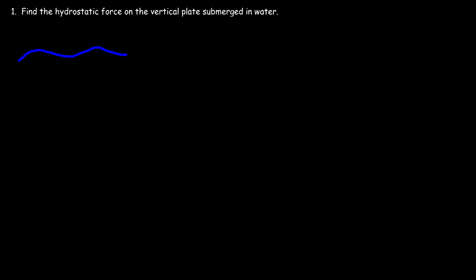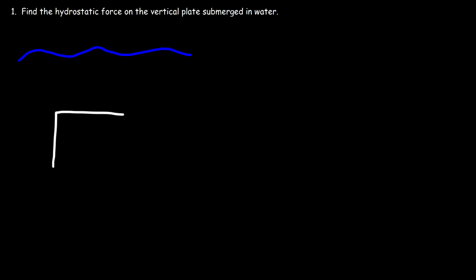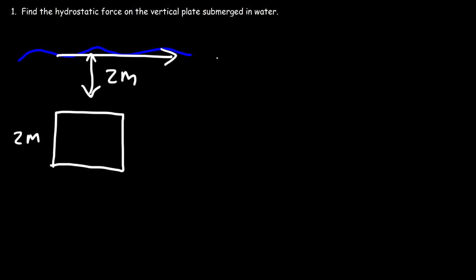Let's say this is the water level and we have a square vertical plate, two meters below the surface, with a side length of two meters. To determine the hydrostatic force on this vertical plate submerged in water, the first thing I would recommend is assigning the x and y axes — the water level is the x-axis, and this is going to be the y-axis.